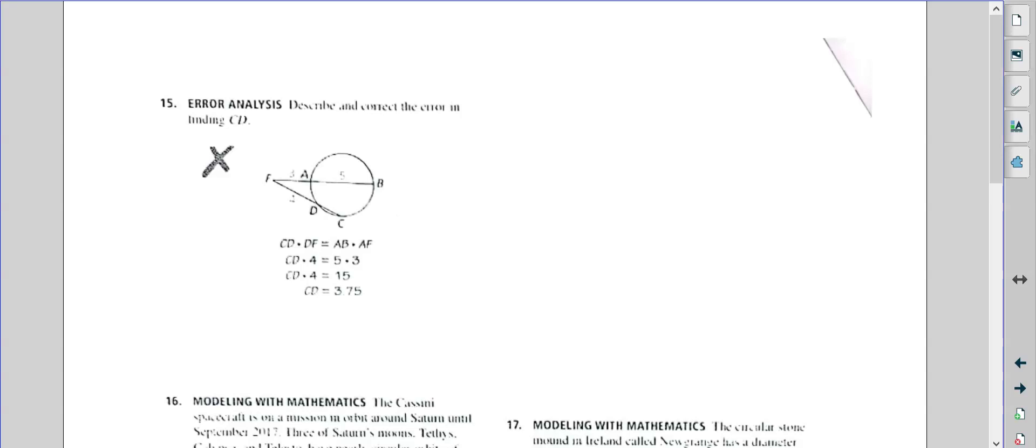All right. What went wrong? So let's check what they did. So CD times DF. So they did this part times this part. Now up here, they did AB times AF. So let's see what they did. They did CD, the unknown, so we'll just call that x. So they did CD times, oh, plus. Well, they did it times.